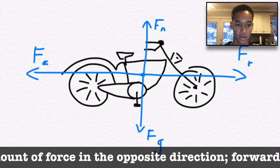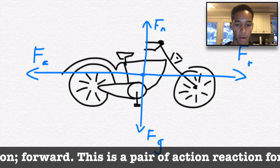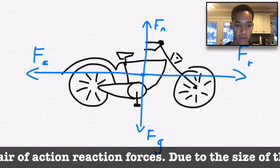Due to the size of the Earth, the force applied to it does not move the Earth backward. However, the force applied to the bike moves it forward.